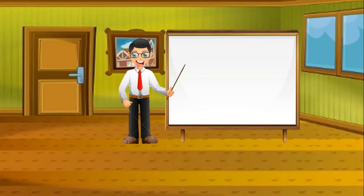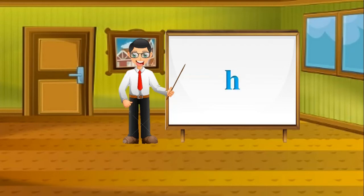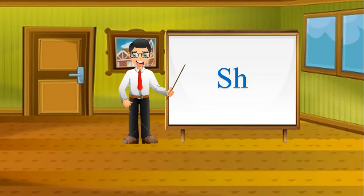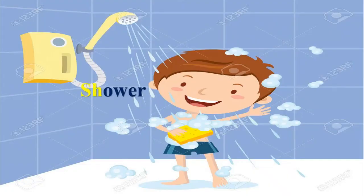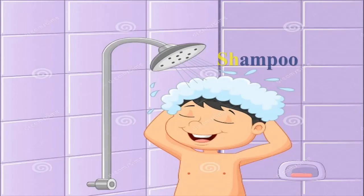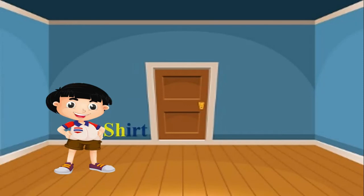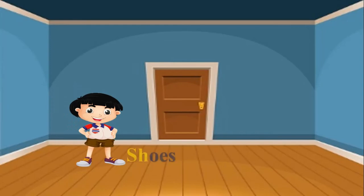Let's learn about the digraph S-H. It will help you read and write each day. S says 'sss', H says 'h'. When you put them together they sound this way: shh, shh, shh. Listen for the sound at the beginning of these words: shower, shampoo, shirt, and shoes.